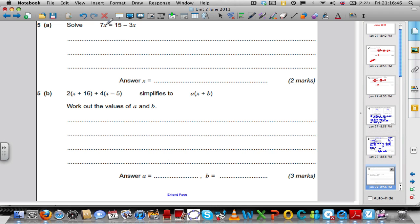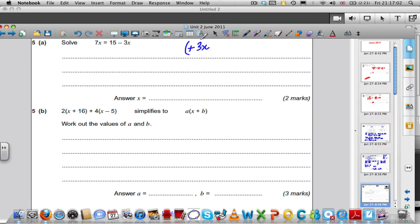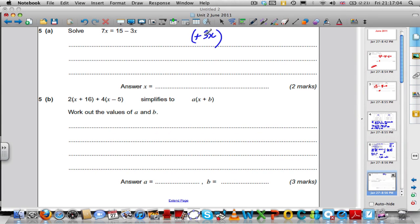Solving a linear equation here. We have 7x on the left-hand side, equals 15 take away 3x. It's a linear equation because the power of x is just 1, so we use simple balancing methods to solve. Let's add 3x to both sides. That will get rid of this negative 3x here, and give us 10x on this side is equal to 15.